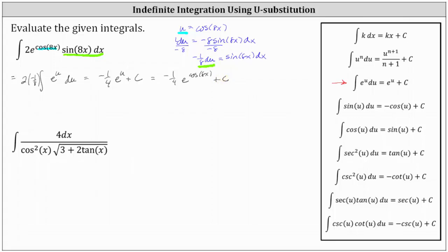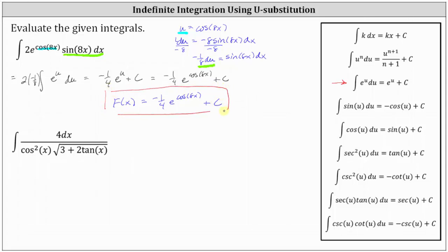We often identify the result of an indefinite integral or the antiderivative using big F of x, where big F of x is equal to negative one-fourth times e to the power of cosine 8x plus c. This is the family of functions whose derivative is equal to the given integrand function. We say family of functions because c can be any constant.